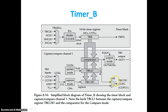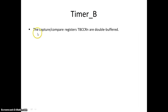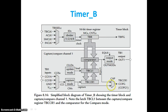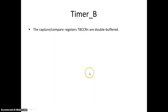The capture compare register TBCCRX is double buffered. In Timer A, the loaded value was compared directly. In Timer B, the value passes through a latch before comparison — that is why it is called double buffered.